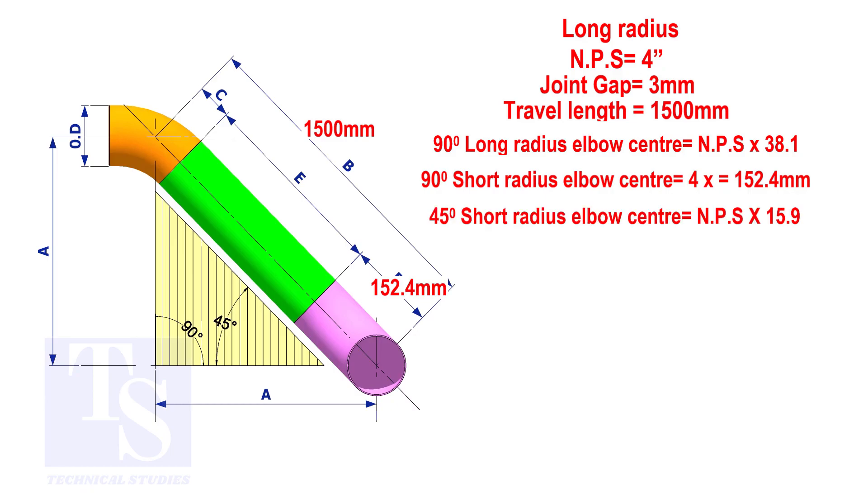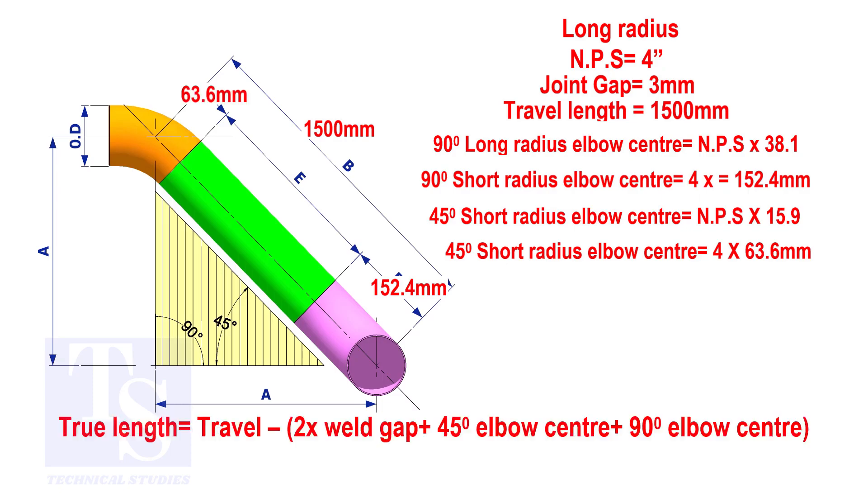To calculate the elbow center of a 45 degree long radius elbow, multiply the nominal pipe size by 15.9. The answer is 63.6 millimeters. Apply the calculation. The true length of the pipe is 1,278 millimeters.